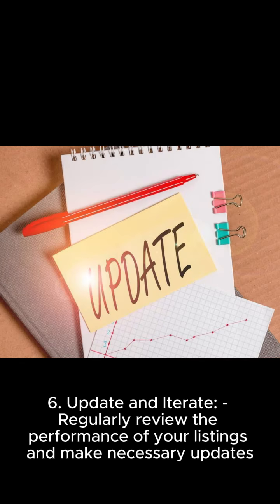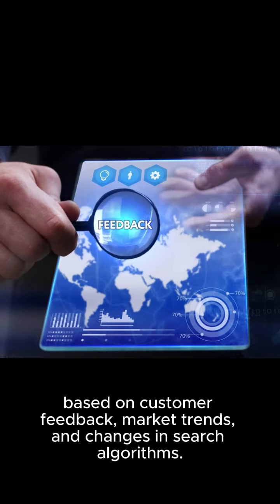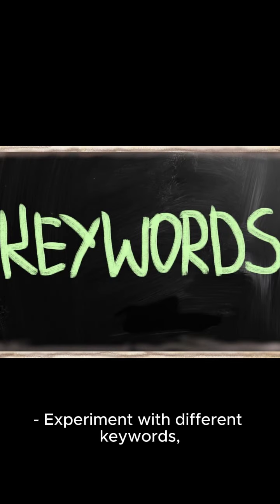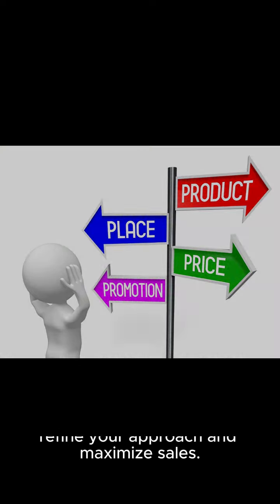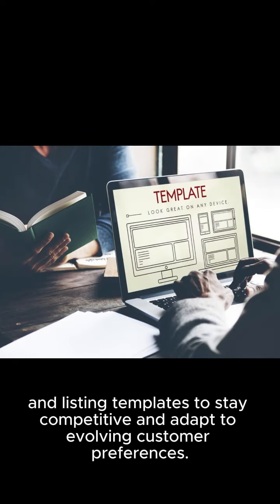Step 6: Update and iterate. Regularly review the performance of your listings and make necessary updates based on customer feedback, market trends, and changes in search algorithms. Experiment with different keywords, product variations, or promotional strategies to refine your approach and maximize sales. Continuously iterate on your product offerings and listing templates to stay competitive and adapt to evolving customer preferences.